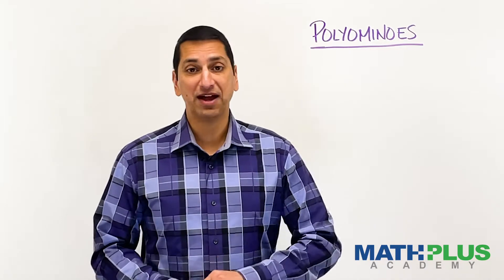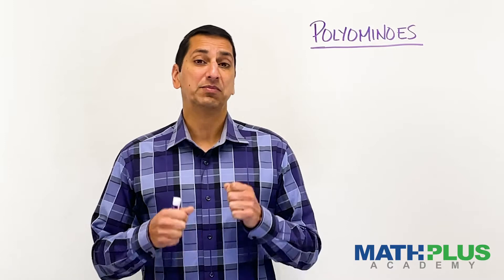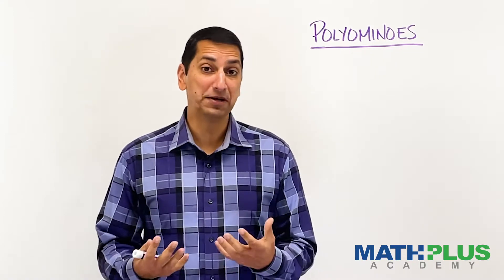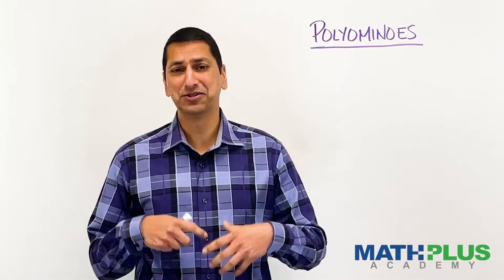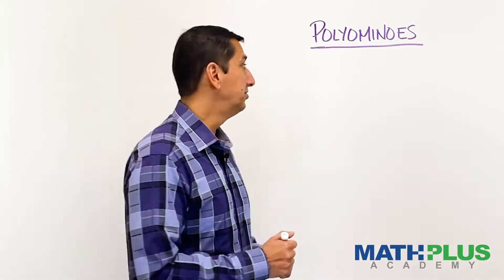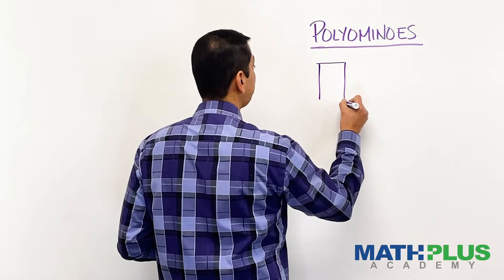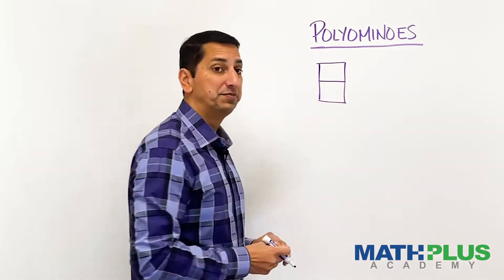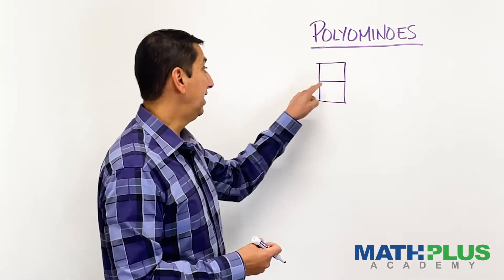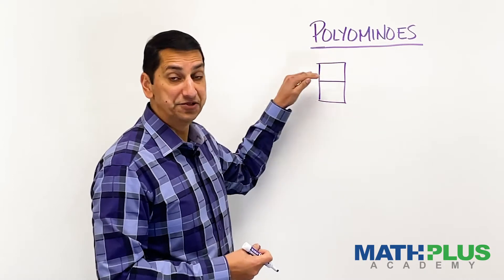Now, you may not have ever heard that term before, but you've probably heard the term domino. You might have played the game dominoes or at least seen what dominoes look like. A domino looks essentially like this. It's basically two squares connected and sharing this edge right here.